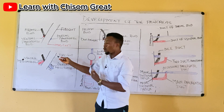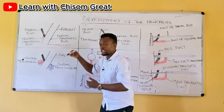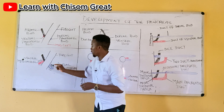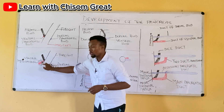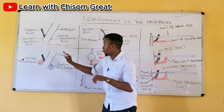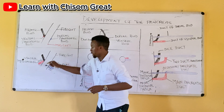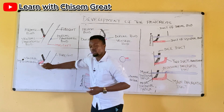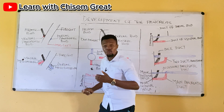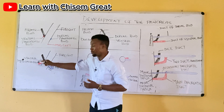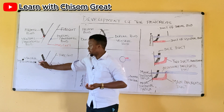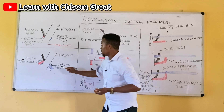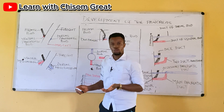The pancreatic buds begin to elongate due to proliferation of cells. You can see the dorsal pancreatic bud elongating and the ventral pancreatic bud elongating. They are growing and passing through the mesogastrium — the ventral pancreatic bud through the ventral mesogastrium, while the dorsal pancreatic bud passes through the dorsal mesogastrium.